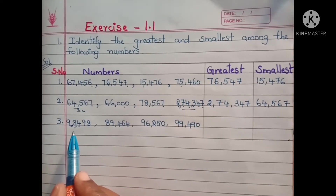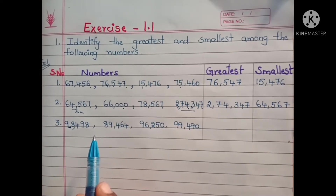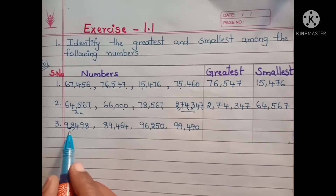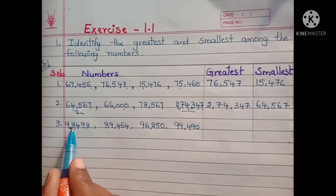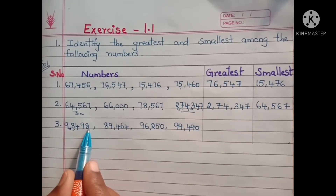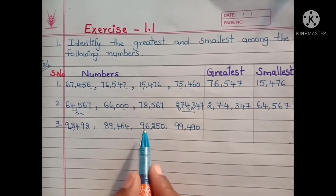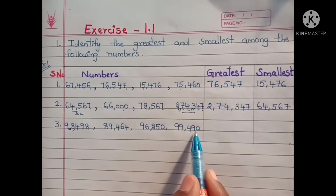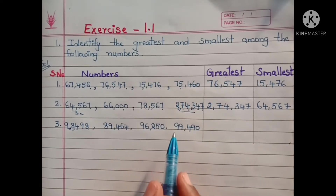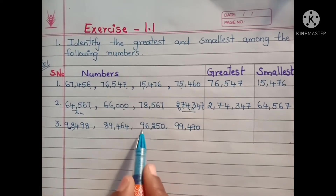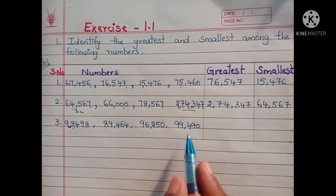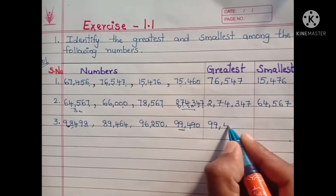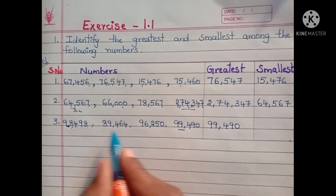Now in the third block, you have to create your own problem. They have given: create your own problem on block 3 and fill in the above table. The numbers I wrote are: 98,498; 89,464; 96,250; and 99,490. Among these, comparing 98, 89, 96, and 99 — 99,000 is the biggest, so I'm writing here: 99,490.